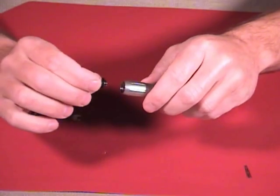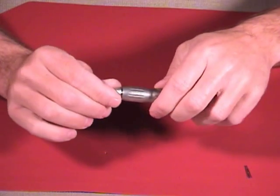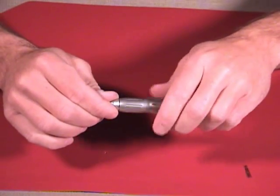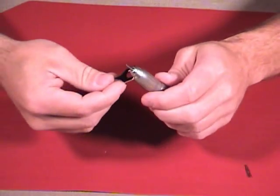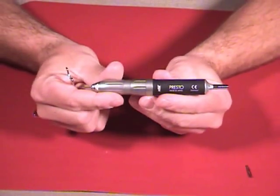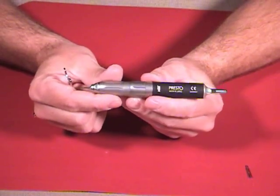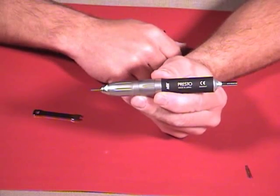We're going to then take and thread the cartridge back onto the handpiece, use our cartridge wrench that came with our tool and just barely snug it up, and we're ready to go again. That's the process of replacing the collet in the NSK Presto handpiece.